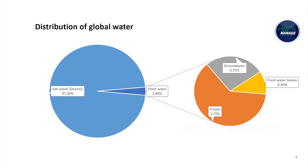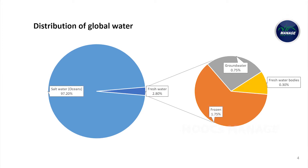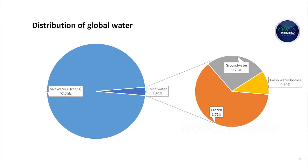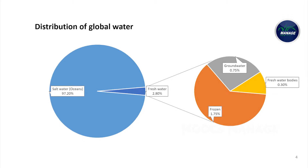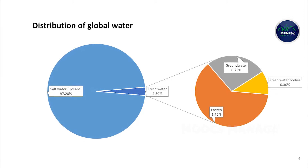If we look at the distribution of global water, more than 97% of the water is available in the oceans. That means less than 3% of the water exists as fresh water, out of which only around 1% is available for human consumption, existing as either groundwater or water present on the terrestrial land mass.